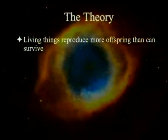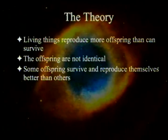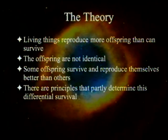The theory is very simple: living things reproduce more offspring than can survive, so some will survive and some will not. The offspring are not identical, and some survive and reproduce better than others. There are principles that partly determine this differential survival — that is natural selection. If you have that, you have evolution. People will push it at you and tell you evolution is a fact, even Darwinian evolution is a fact, because those four things are all true.